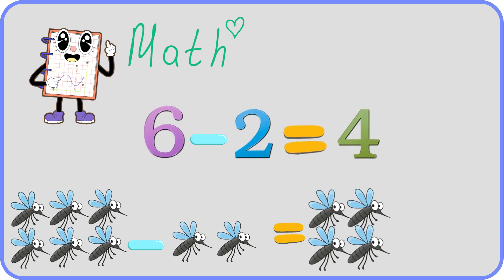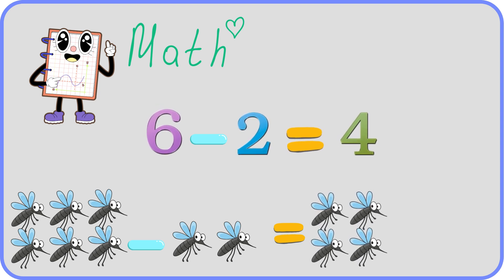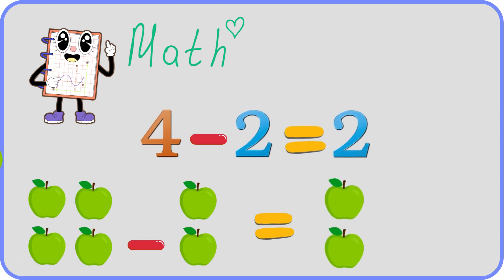Six minus two equals four. Four cheeky flies. Four minus two equals two. Two green apples.